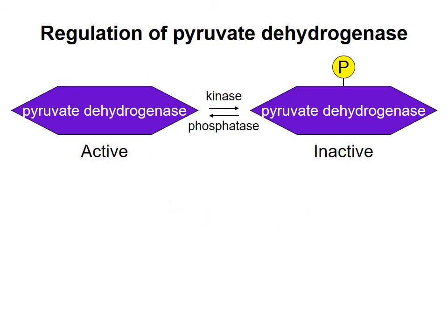This is a very important reaction to regulate because by doing this, the cell is committing itself to converting carbohydrates into lipids. The regulation of this enzyme is accomplished by phosphorylation, where the phosphorylated form is less active than the dephosphorylated form. The phosphorylation is carried out by an enzyme called a kinase, and there's also a phosphatase that will specifically dephosphorylate the enzyme.